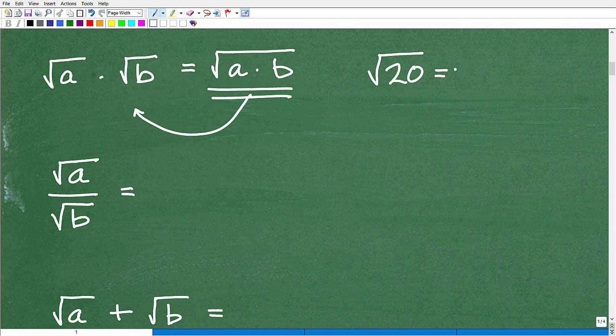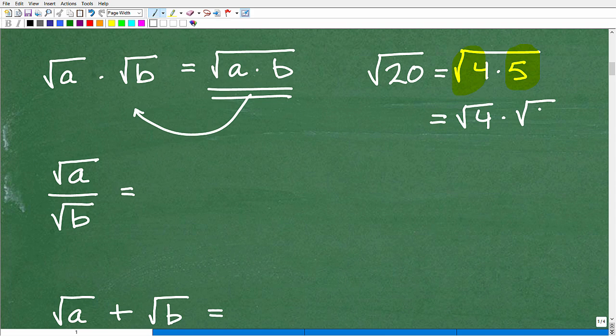So this A times B, you're saying, well, the square root of 20, isn't that the same thing as the square root of 4 times 5? Yes, it is. So I'm kind of going backwards here. Now, the reason why I would want to do this is I can split up these two factors into their own individual little square roots.